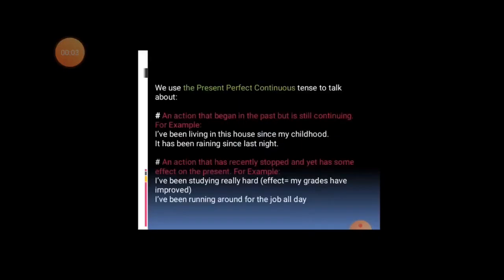Now let's see present perfect continuous tense. We use present perfect continuous tense to talk about an action that began in the past but is still continuing in the present. For example: I have been living in this house since my childhood; it has been raining since last night — the action is still going on.